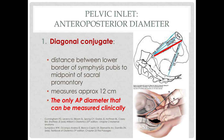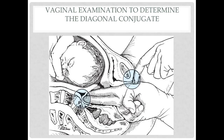To clinically measure the diagonal conjugate, two fingers of your examining hand are inserted into the vagina and reach for the sacral promontory. Note where the inferior border of the symphysis pubis touches the base of your finger. The distance between the tip of the middle finger up to that point is the diagonal conjugate, measured in centimeters — not in inches.